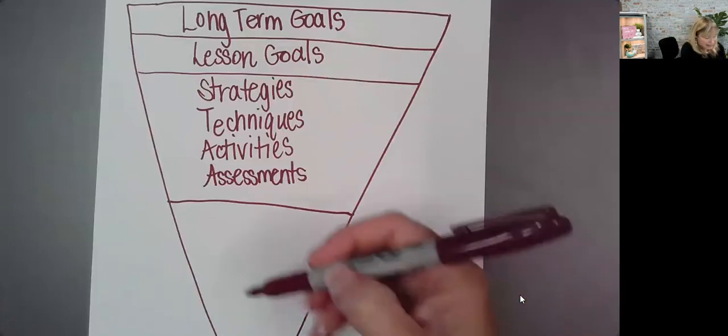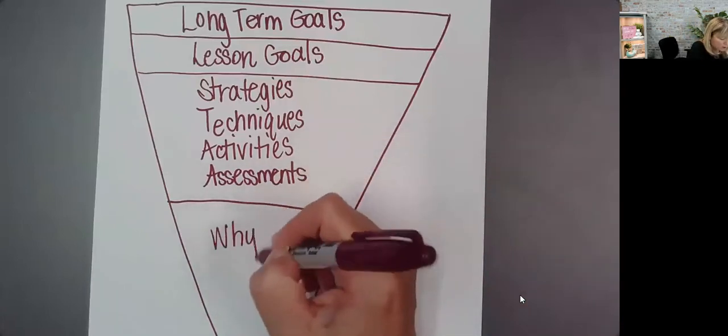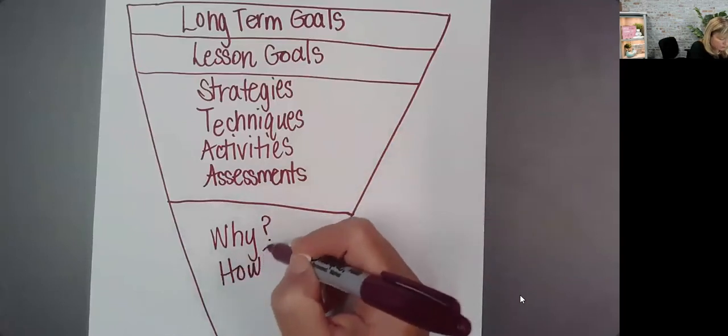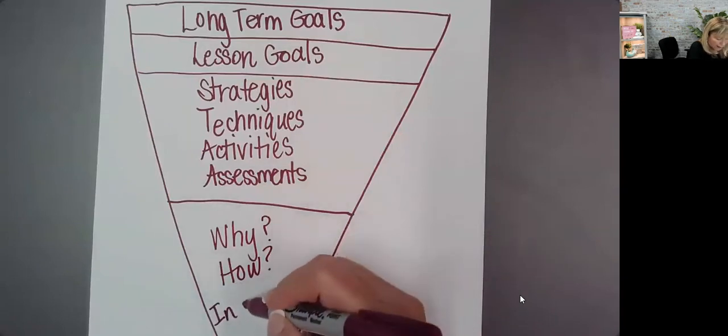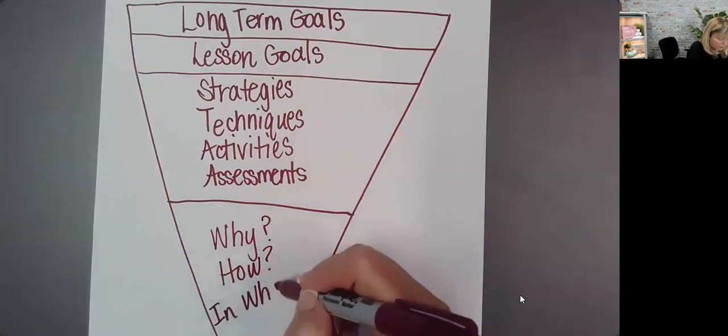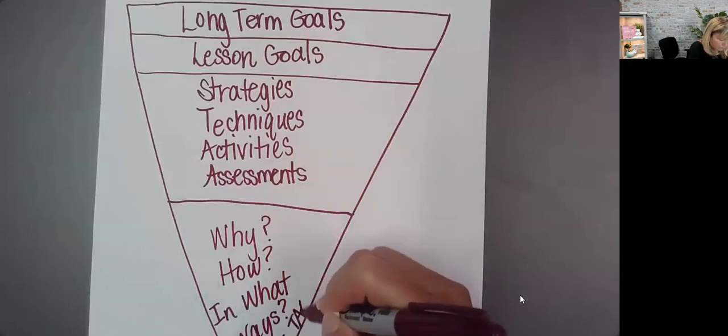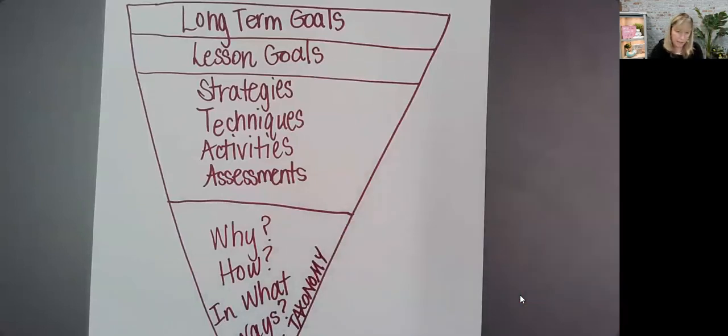And the last thing here on our candy corn, which I know it's more colors than we really have on candy corn, is that level of questioning that you ask these kiddos. So we would want to hear you asking things like why, how, in what ways. We want you really thinking of Bloom's taxonomy when you think of this lesson.